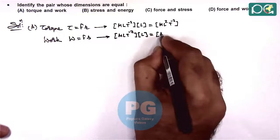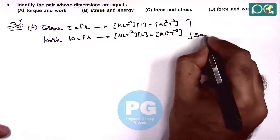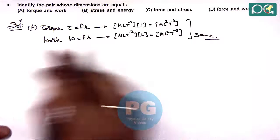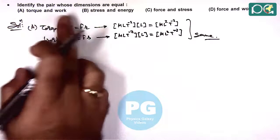It is M L 2 T minus 2. So we can see these are having same dimensions so we can directly write the answer to this question is option A, the pair which is having same dimensions.